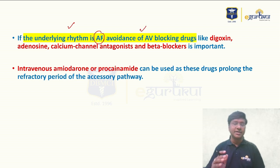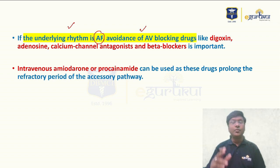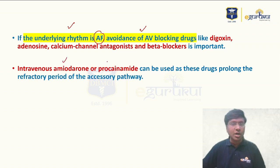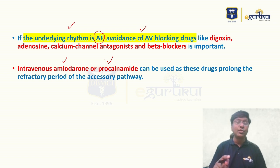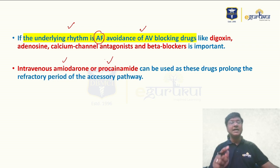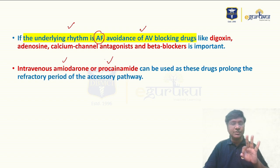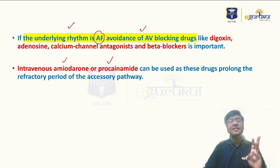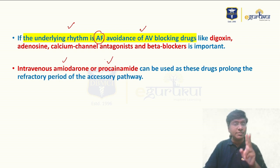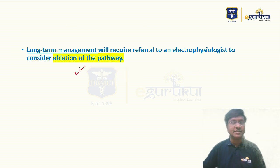In atrial fibrillation with WPW syndrome, AV nodal blocking drugs — digoxin, adenosine, calcium channel blockers, and beta blockers — should be completely avoided. For a hemodynamically stable patient with AF and WPW syndrome, you need to give intravenous amiodarone or procainamide. In this patient, I gave 150 mg of amiodarone once stabilized. When the patient was hemodynamically unstable, I gave 200 joules of synchronized DC cardioversion, and once stable, I started amiodarone. Summary: diagnosis is WPW with AF; cause is re-entry; first-line management is DC cardioversion if unstable, or amiodarone/procainamide if stable.